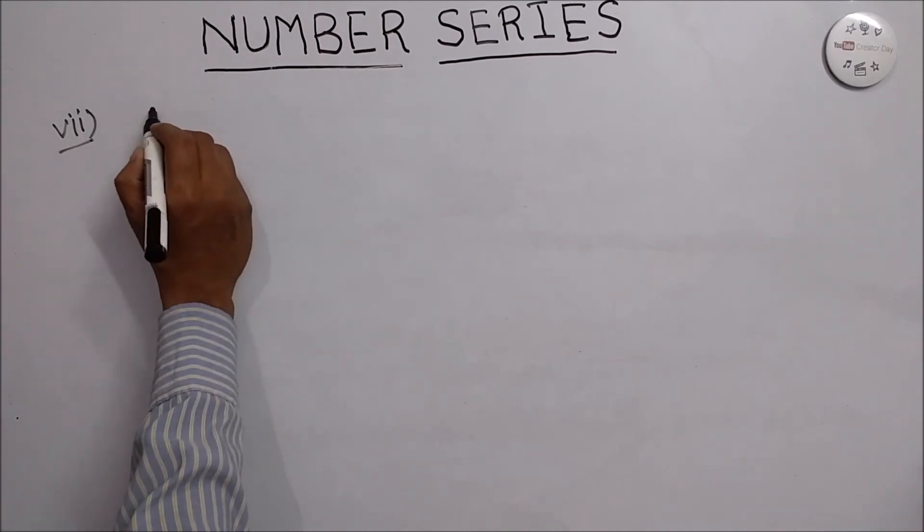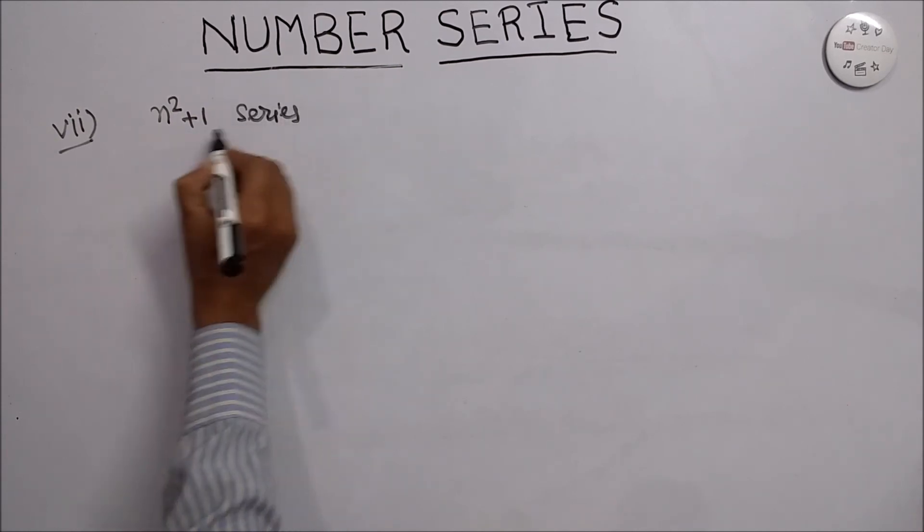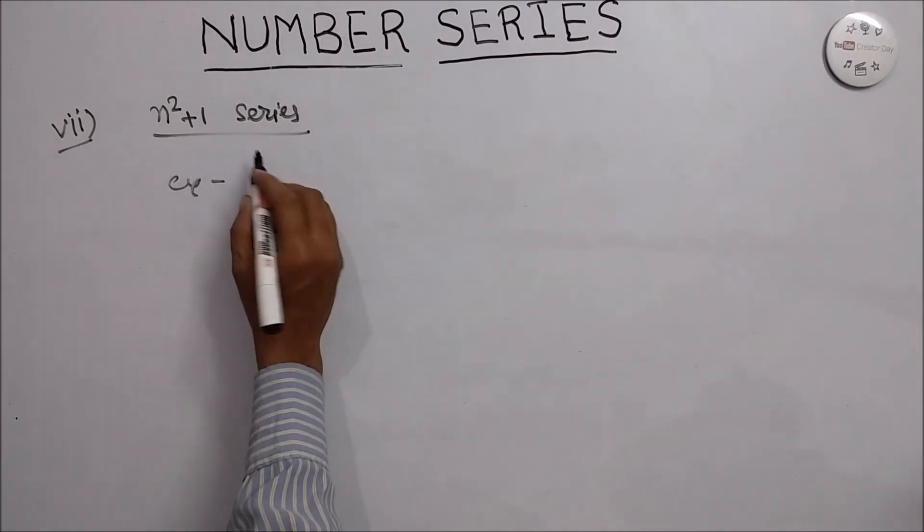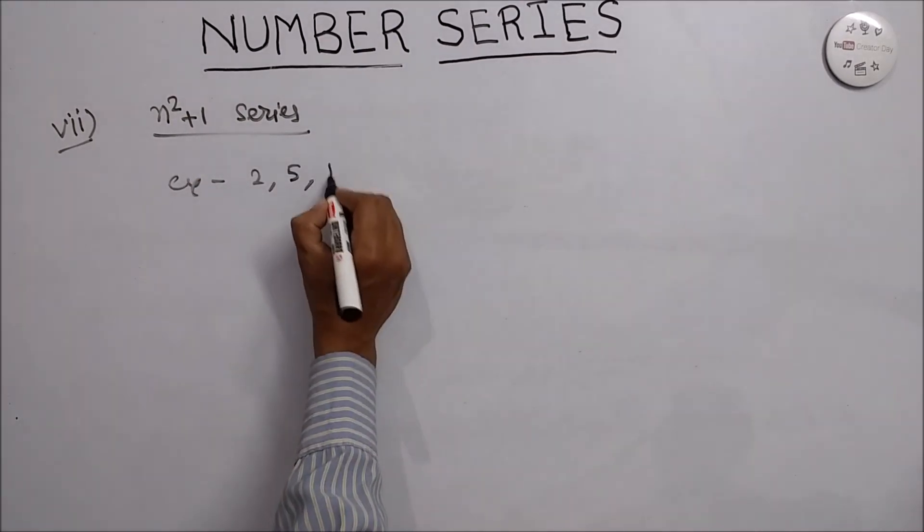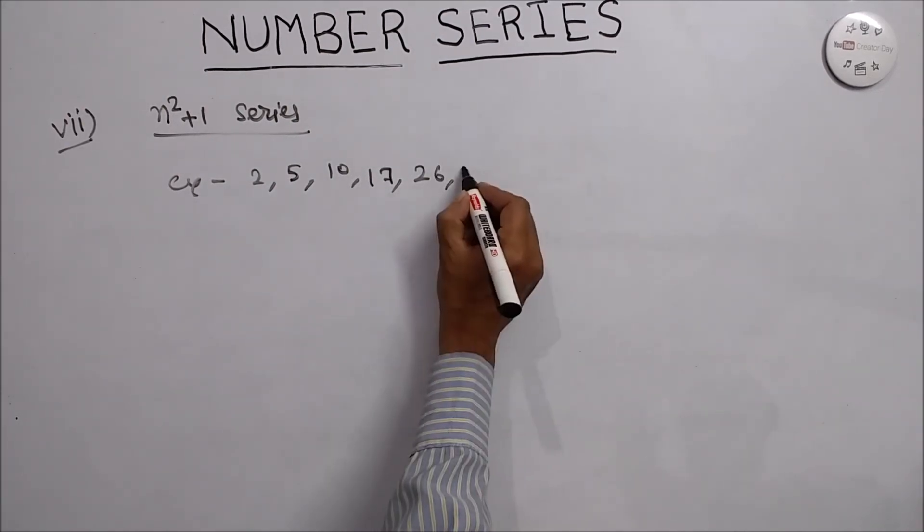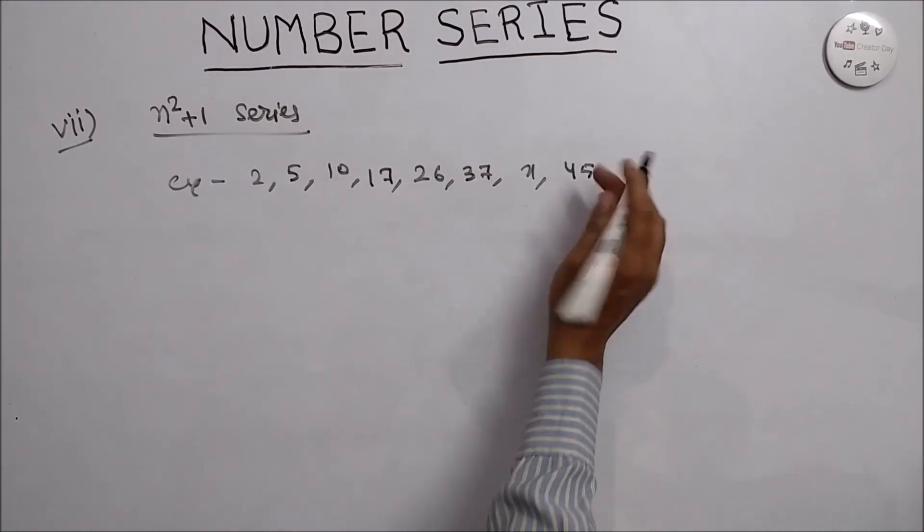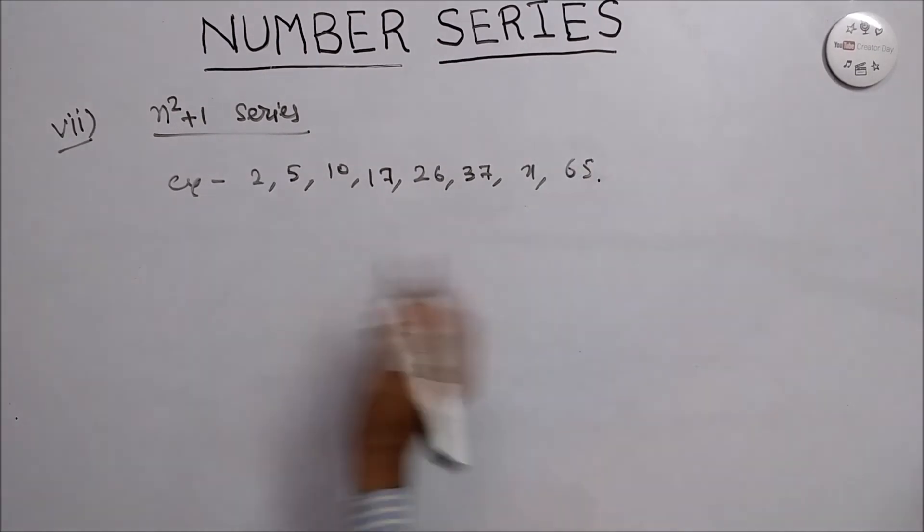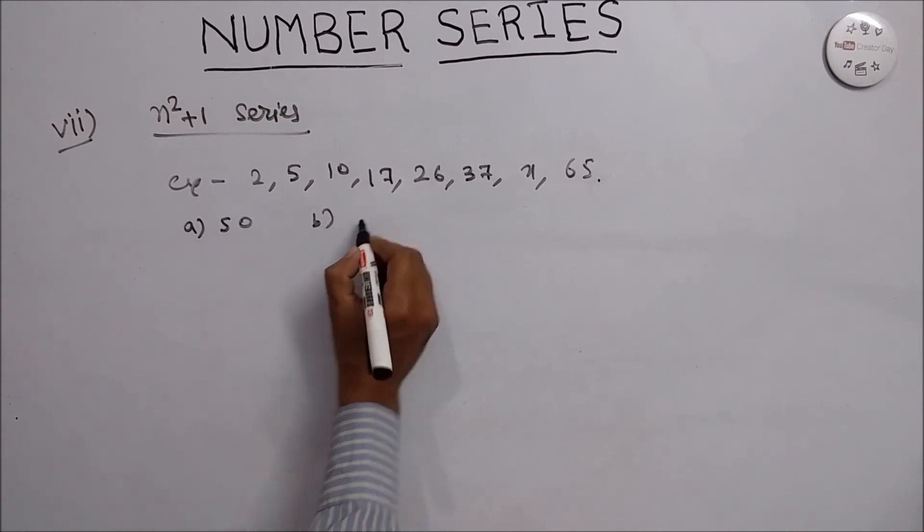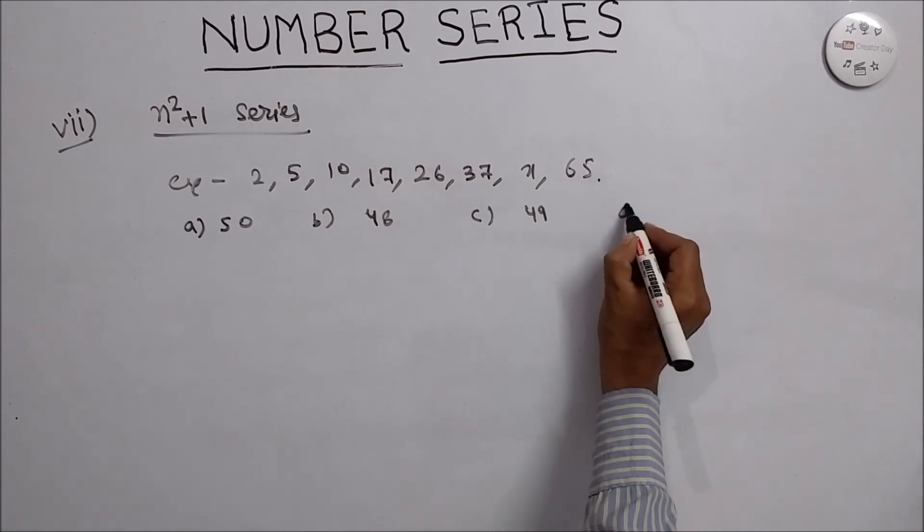7th type, that is n square plus 1 series. We will take example: 2, 5, 10, 17, 26, 37, x, and 65. Options are A is 50, B is 48, C is 49, and D is 51.